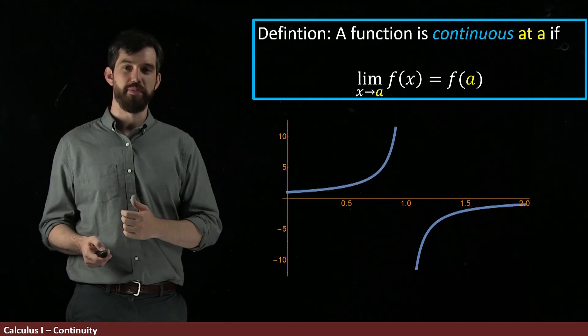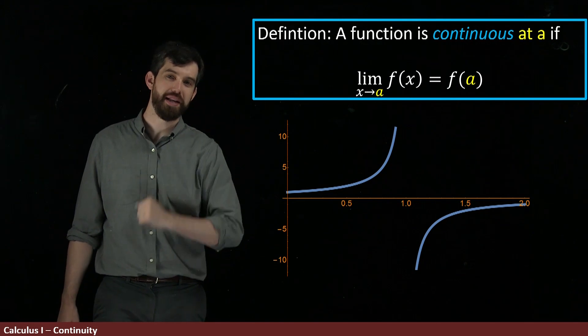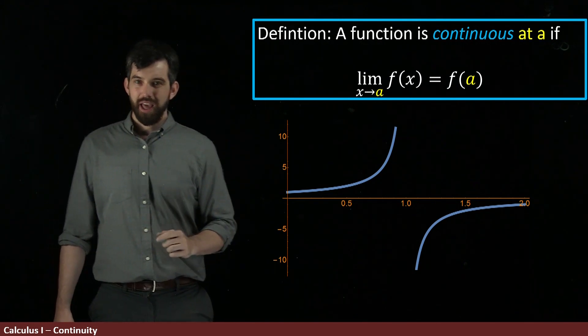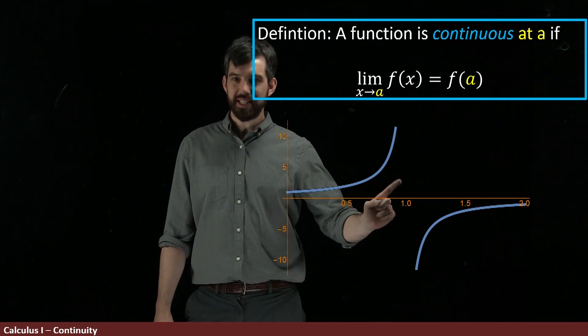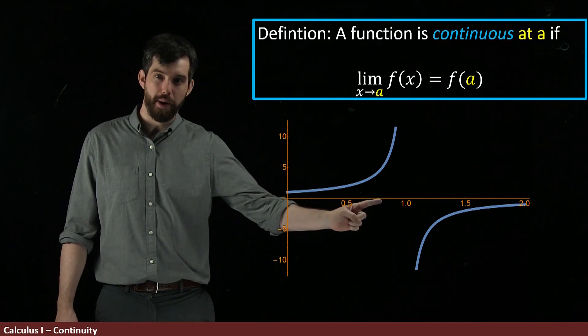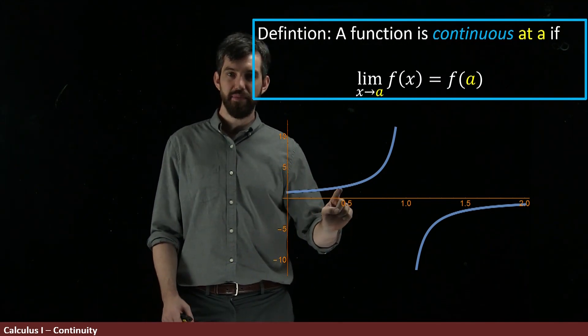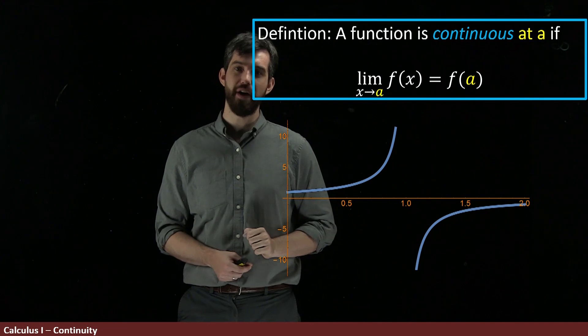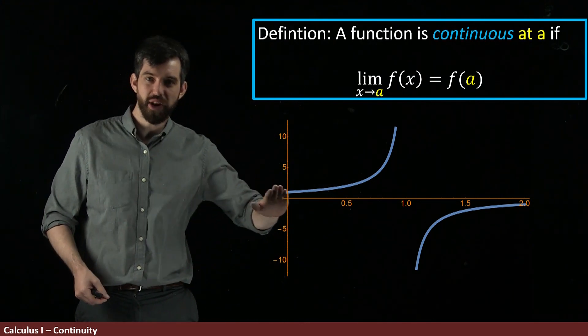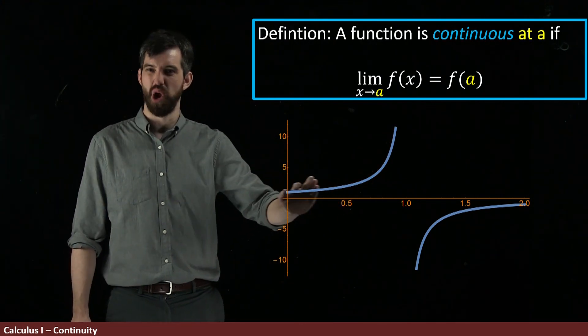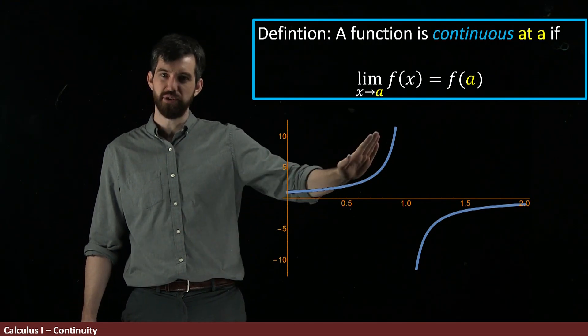So let's go back to one of our examples. This was the 1 over 1 minus x. If I look anywhere except for the problem spot, the problem spot's at one. If I look anywhere else, then the limit is just whatever the function value is going to be. So it's continuous in all of this stuff. There's no jumps, there's no holes, there's no oscillations, there's no spikes.